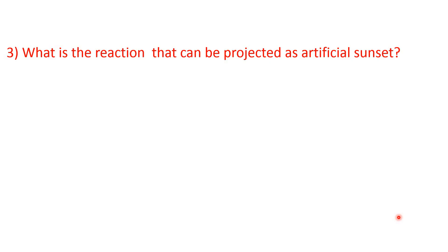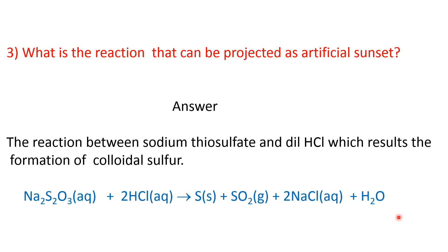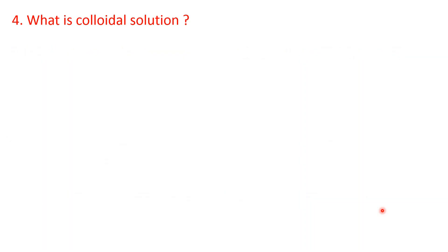Third question: what is the reaction that can be projected as artificial sunset? The answer is the reaction between sodium thiosulfate and dilute hydrochloric acid, which results in the formation of colloidal sulfur. So this is the equation: sodium thiosulfate and dilute hydrochloric acid form colloidal sulfur along with other products like sulfur dioxide gas, sodium chloride, and water.